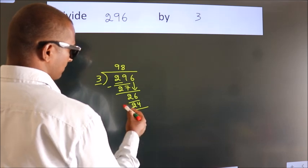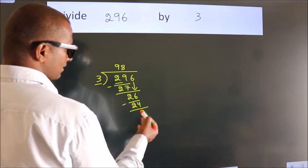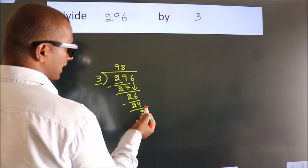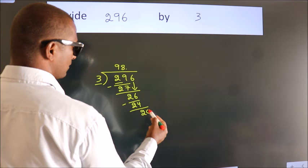Now we subtract. We get 2. After this, no more numbers to bring down. So what we do is, we put a dot and take 0.